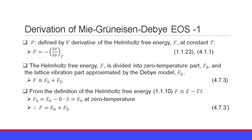Let us derive the Mie-Grüneisen Debye equation of state. Let us start with the pressure expressed using the Helmholtz free energy. Namely, pressure is the volume derivative of the Helmholtz free energy F at constant temperature T. The Helmholtz free energy F is divided into two parts: one is the zero-temperature part F0, and the other is the lattice vibration part.